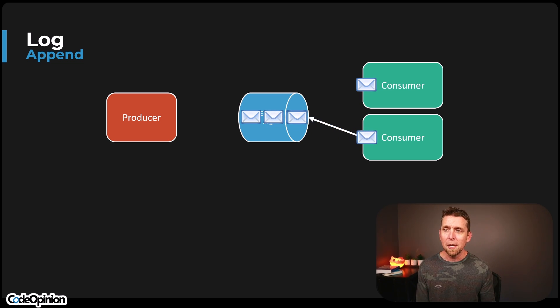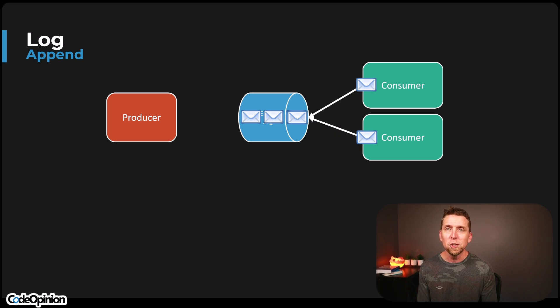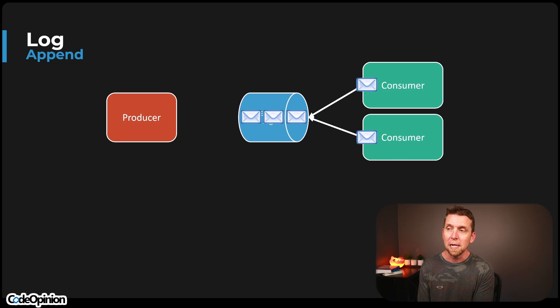A consumer can say it processed a message and request the next one at that index. Because those messages are always there, a consumer can say it wants to reprocess from index zero again, rather than from where it already processed. You can start brand new consumers that read right from the beginning of the log. Now, with consumer groups and partitions, you can kind of get Kafka to behave like a queue, but you're going to lose the ability to have competing consumers.